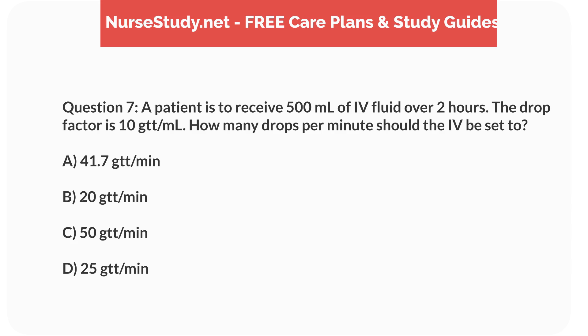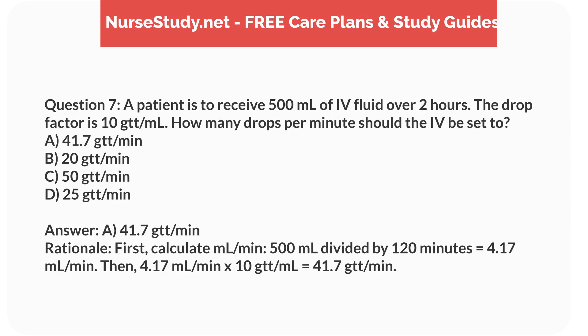Question 7. A patient is to receive 500mL of IV fluid over 2 hours. The drop factor is 10 drops per mL. How many drops per minute should the IV be set to? a. 41.7 drops per minute, b. 20 drops per minute, c. 50 drops per minute, d. 25 drops per minute. Answer: a. 41.7 drops per minute. Rationale: First, calculate mL per minute: 500mL divided by 120 minutes equals 4.17mL per minute. Then, 4.17mL per minute times 10 drops per mL equals 41.7 drops per minute.